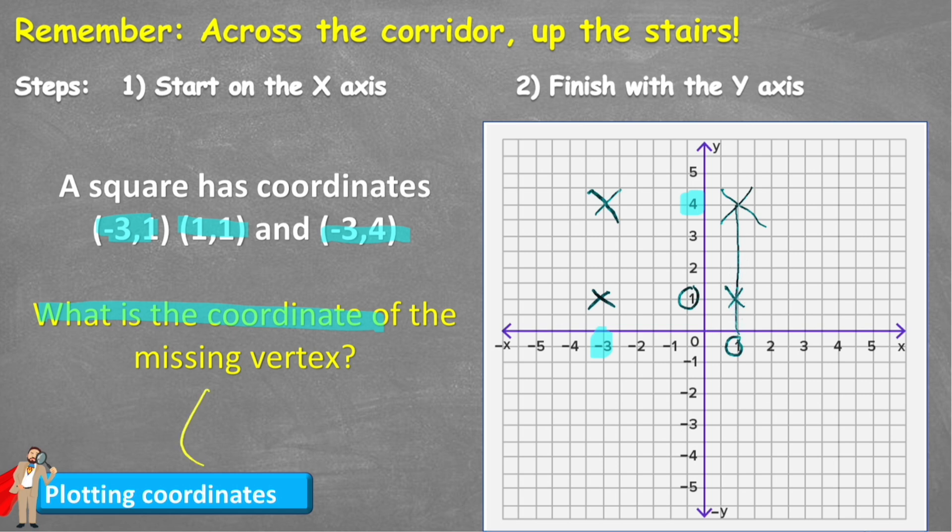And if I go along to the y-axis, I can see that I land on four, therefore my y-axis is four. Therefore, the missing vertex is on the coordinate positive one, positive four. And get myself a mark there.